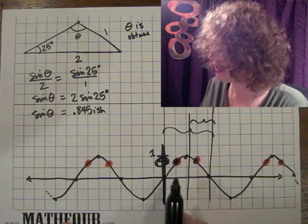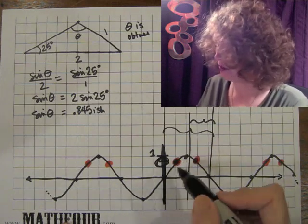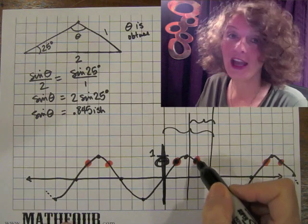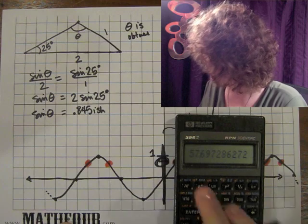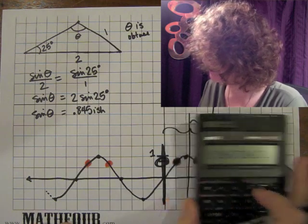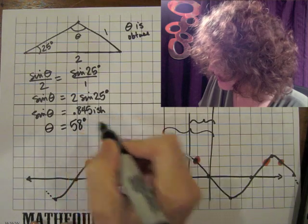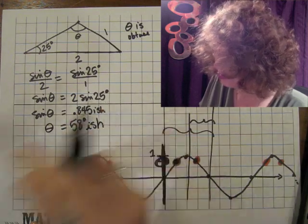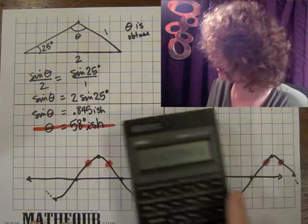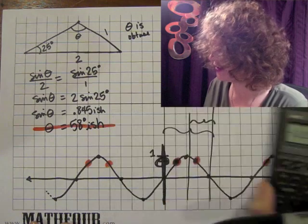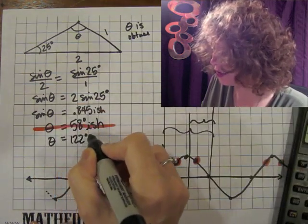So the calculator just picks the most likely answer — it's been programmed to pick this one, but you want that one. Taking the arc sine gives us about 58 degrees. So we might say theta is 58 degrees-ish, but that's not true. Theta is really 180 degrees minus that, so it's about 122 degrees-ish.